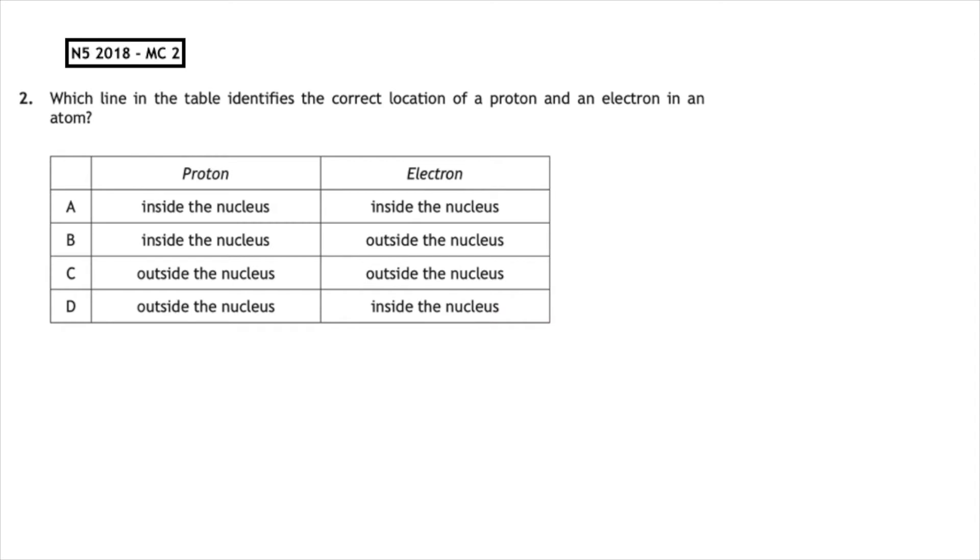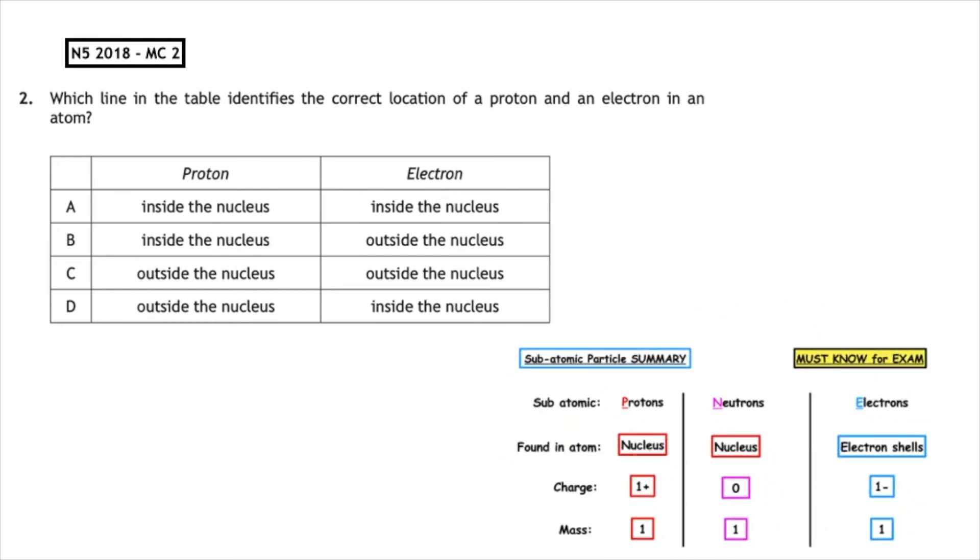This past paper question is from the National 5, 2018, multiple choice 2. Which line in the table identifies the correct location of a proton and an electron in an atom? Protons are found inside the nucleus and electrons are found outside the nucleus. So the correct answer to this is multiple choice answer B.